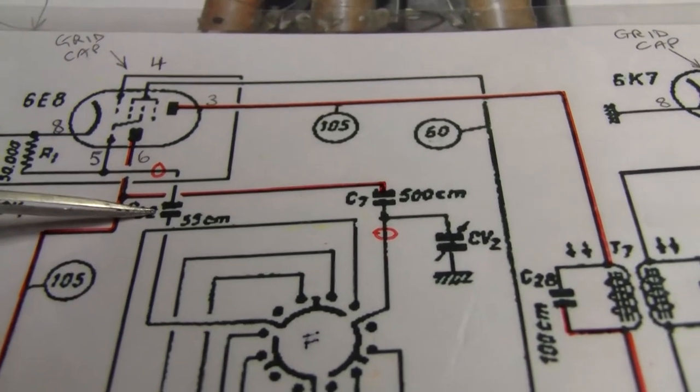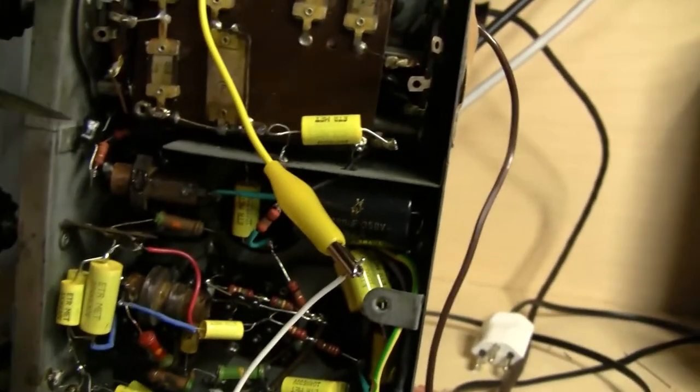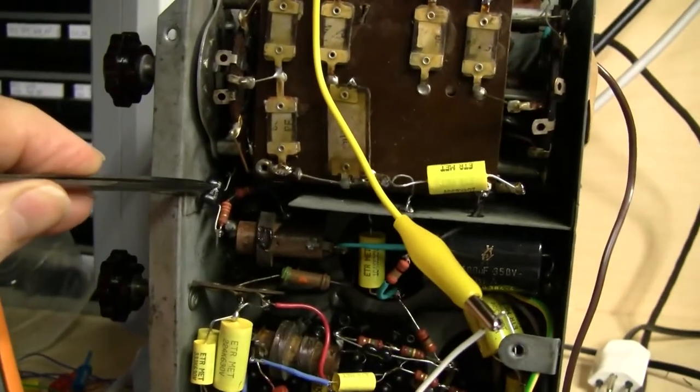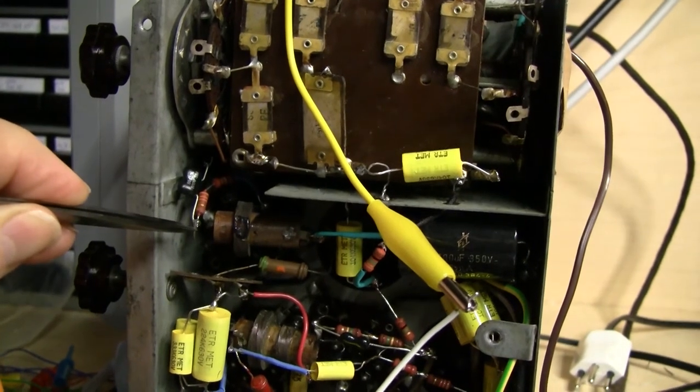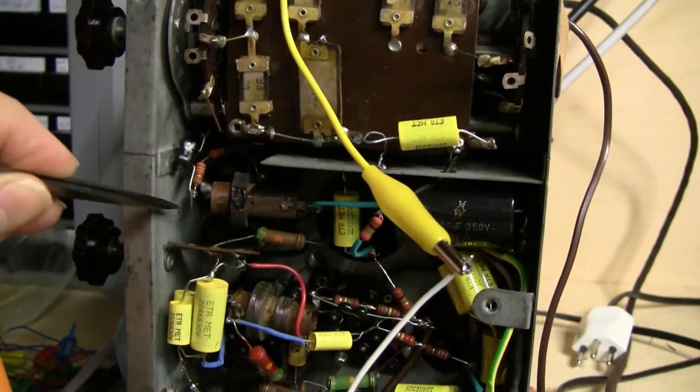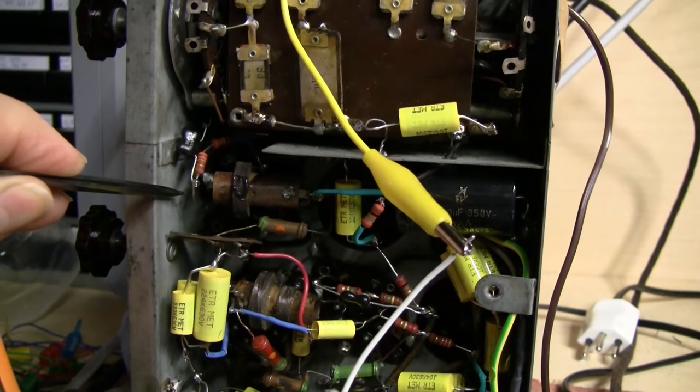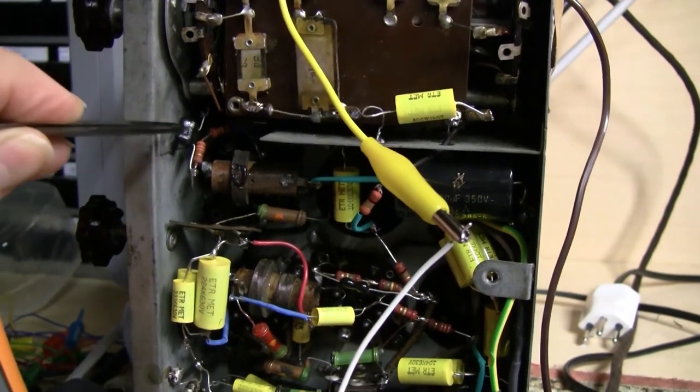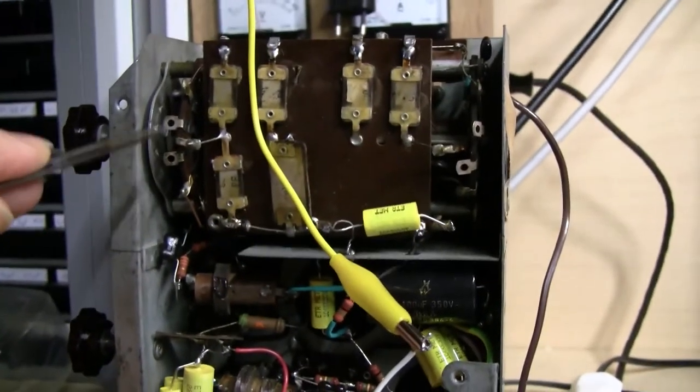In the working set, I can find it here, it's this little guy right here, which is right close, it's actually just almost directly connected to the valve pin. And then a wire goes from it off to the wave band selector.